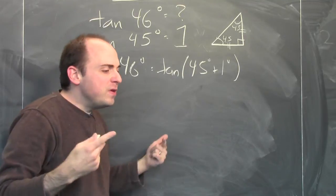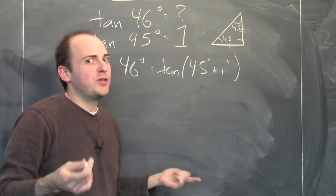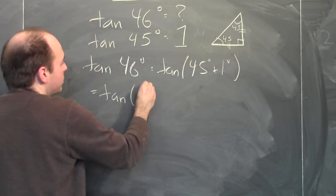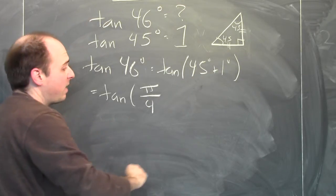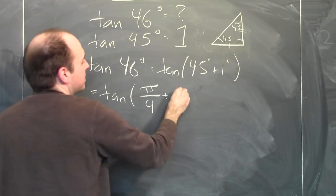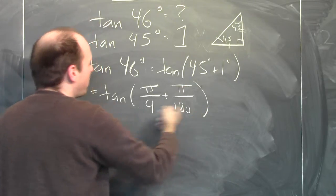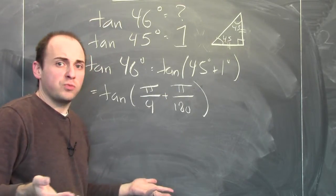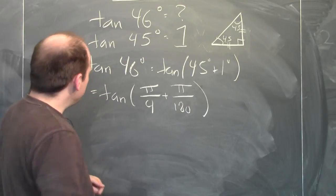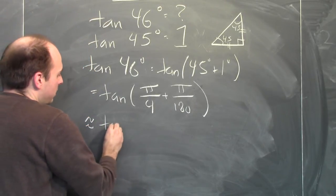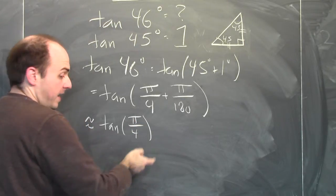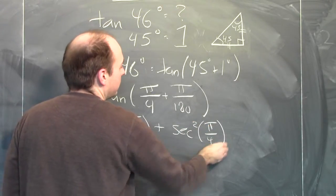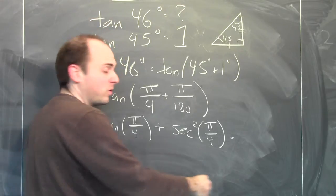A little bit of bad news: the derivative of tangent is secant squared only when measuring in radians. So I convert: tangent of pi over 4 (which is 45 degrees) plus pi over 180 radians (which is 1 degree). Using the derivative, this is approximately the tangent of pi over 4, which is 1, plus the derivative at pi over 4 — secant squared of pi over 4 — times how much I wiggle the input, pi over 180.